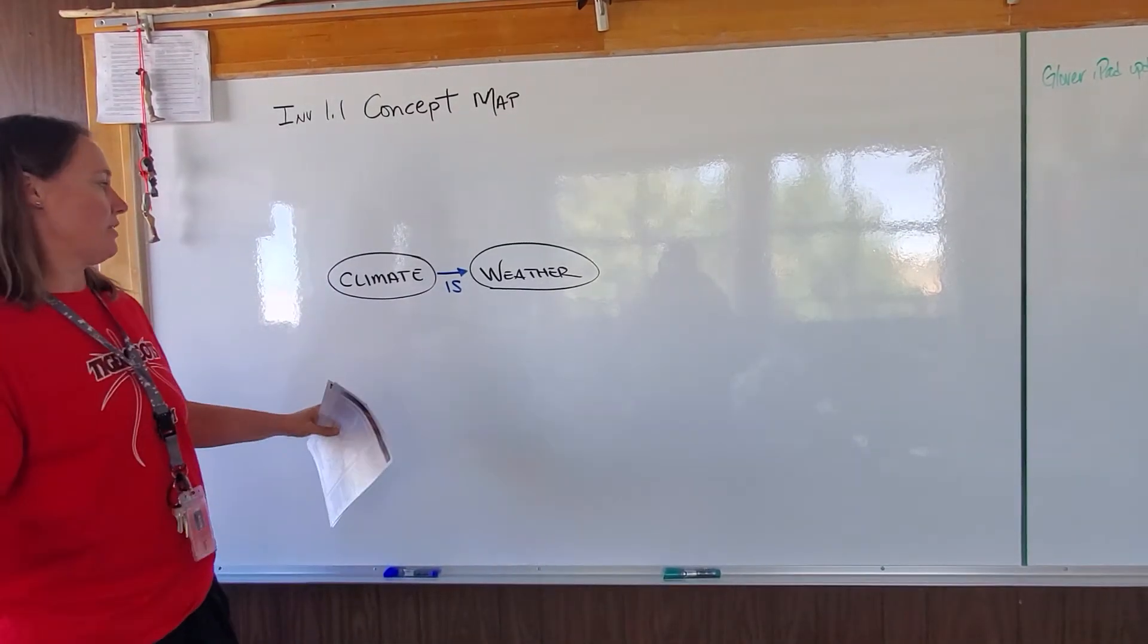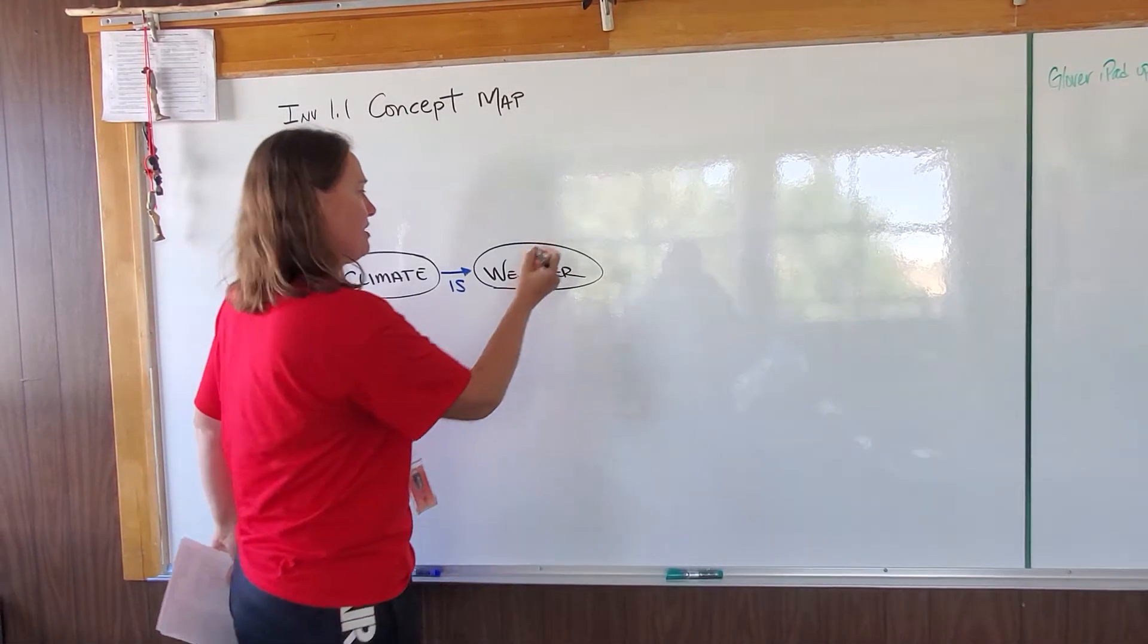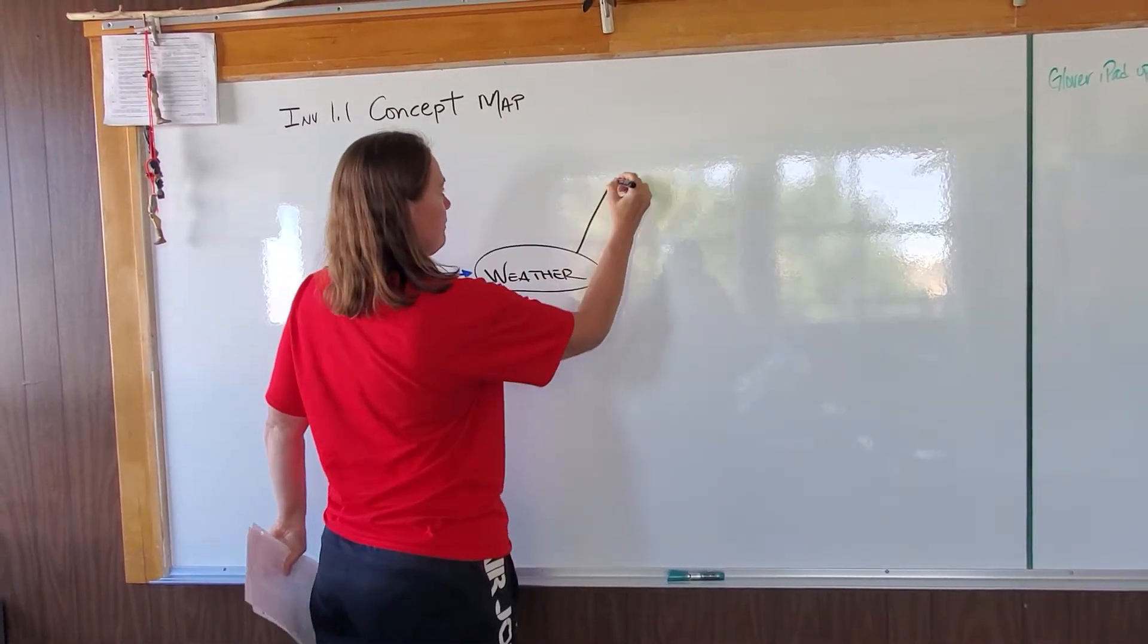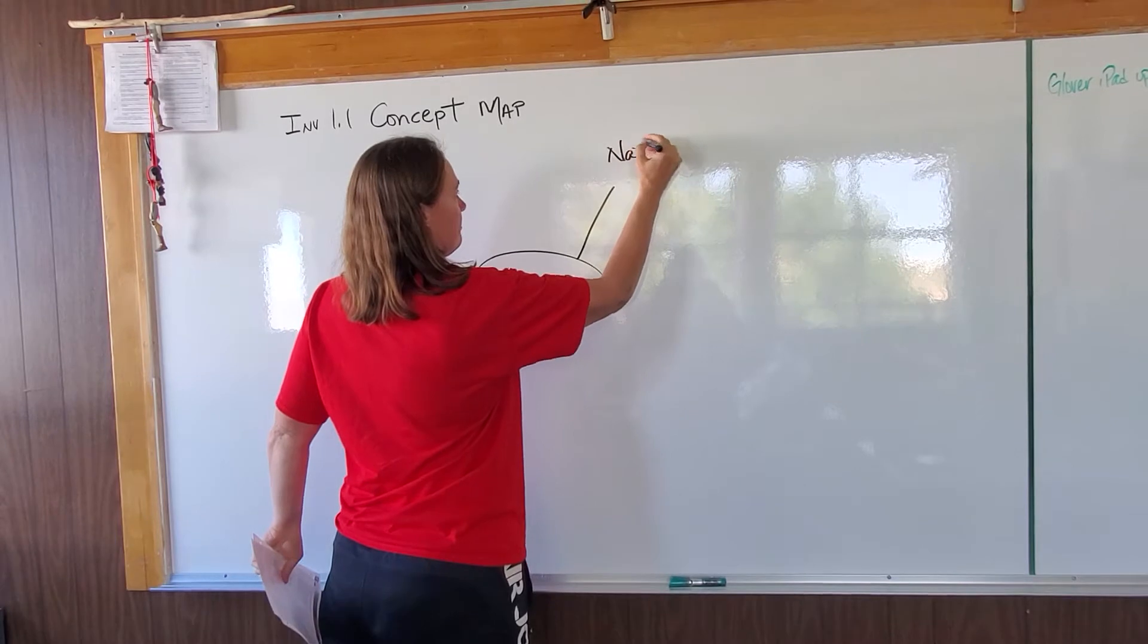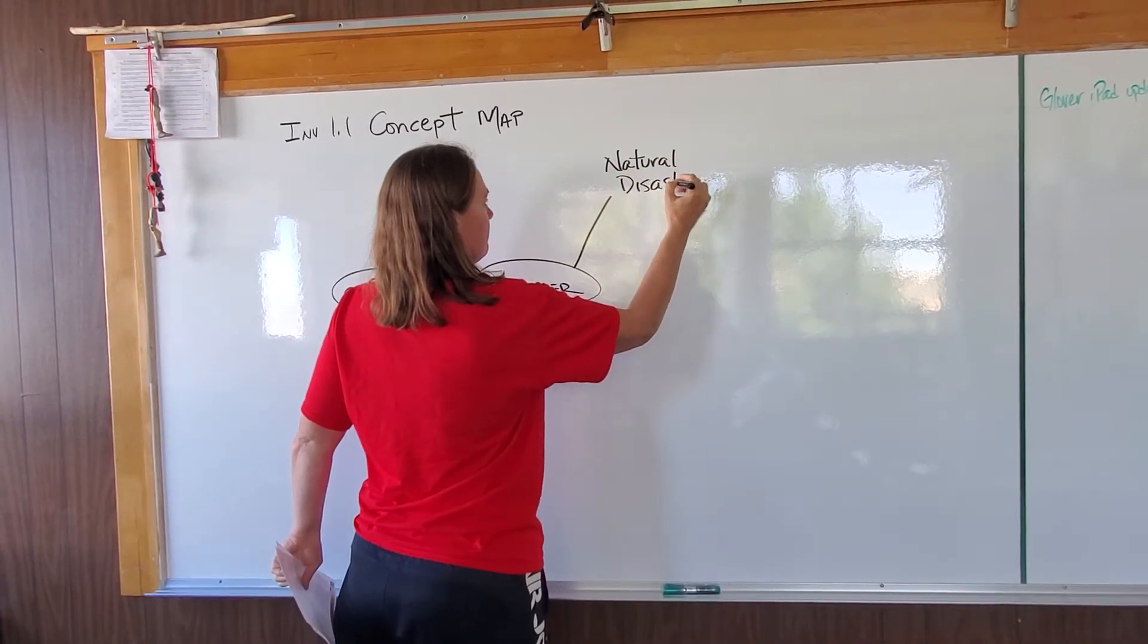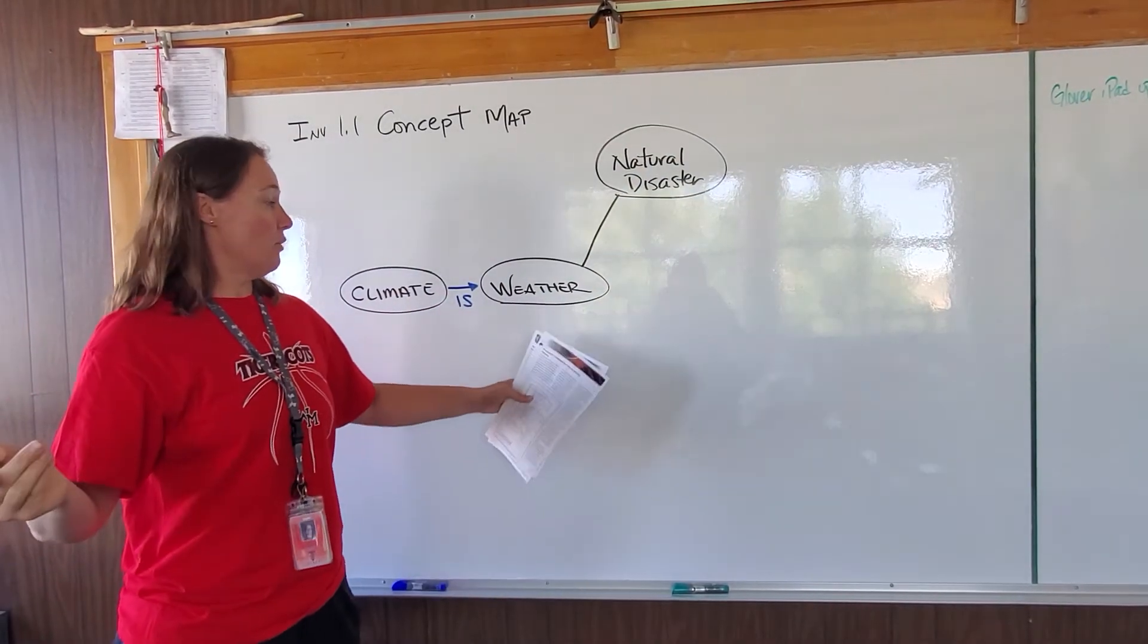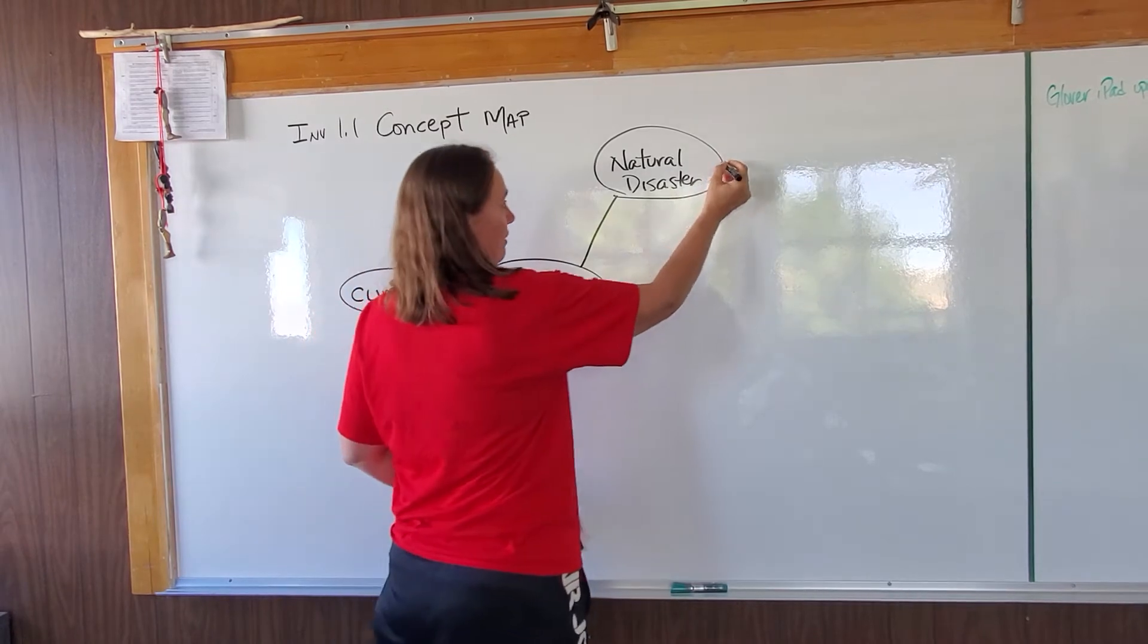So then what do we know about weather? Well, I know that weather can be disastrous. We had some disasters here this year for weather. What are some disasters that could come from weather? You would list those off.